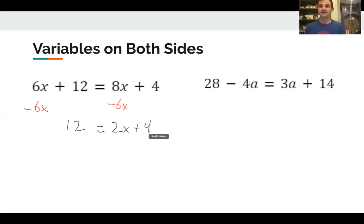So this would be 6x - 6x is 0x. There are no more X's on that side, so it's just the 12. And then 8x - 6x is 2x + 4. And now we're back in our comfort zone. We know how to do this. X is being multiplied by two, added by four. So I subtract four and I get 8 = 2x. Then I divide by two and I get x = 4. That part we know. The real challenge here is that first step that I'm doing in red.